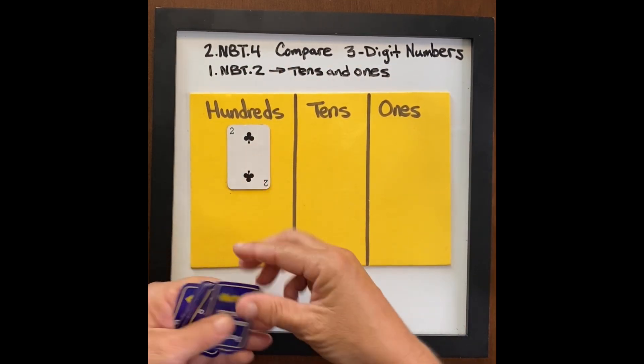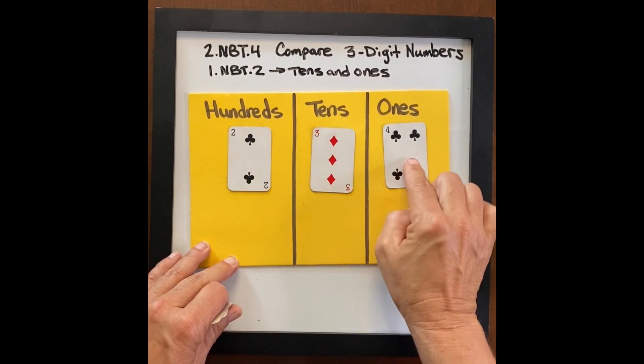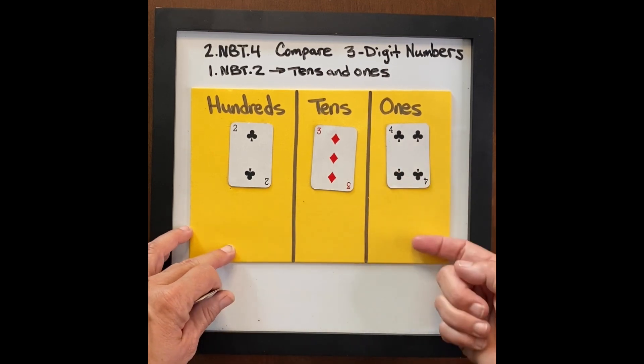So here we have two hundred, two hundred thirty, two hundred thirty four. Let's see if we can make a larger number.